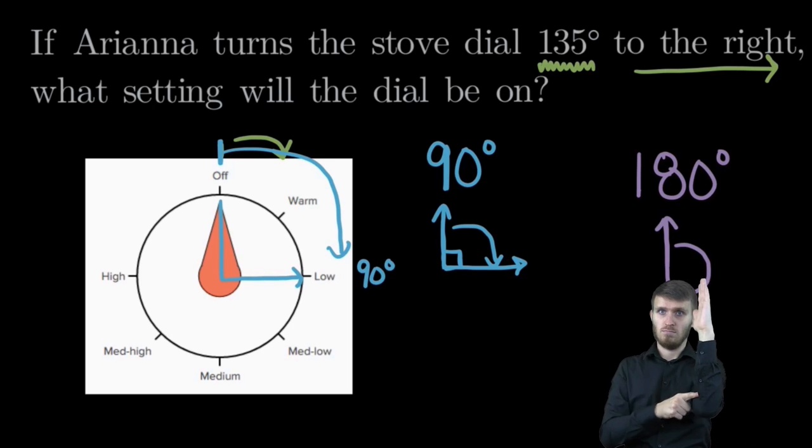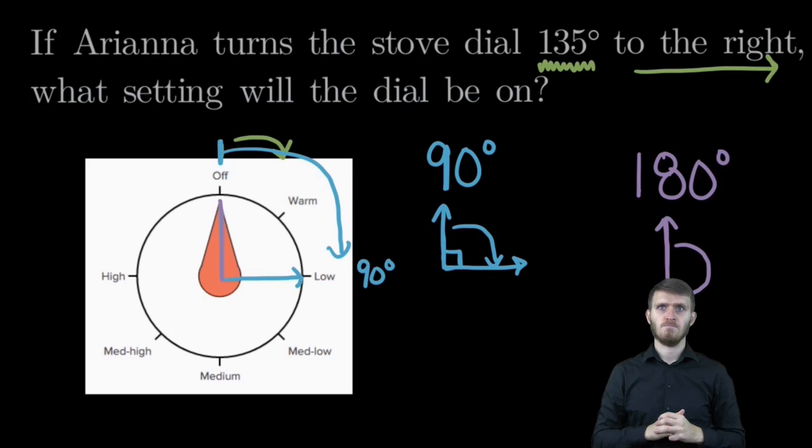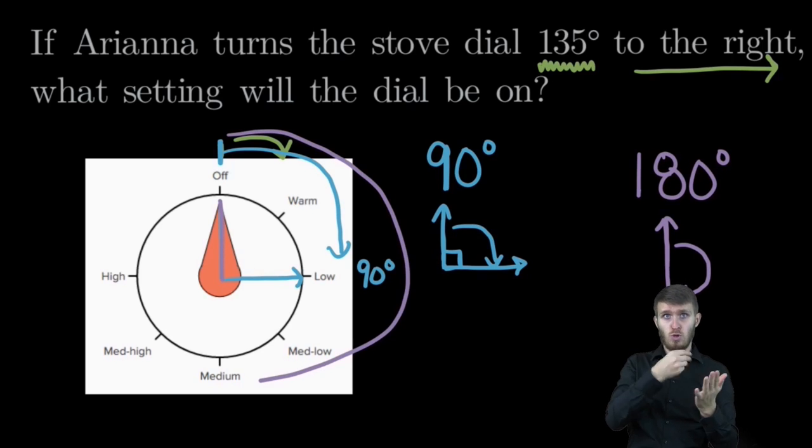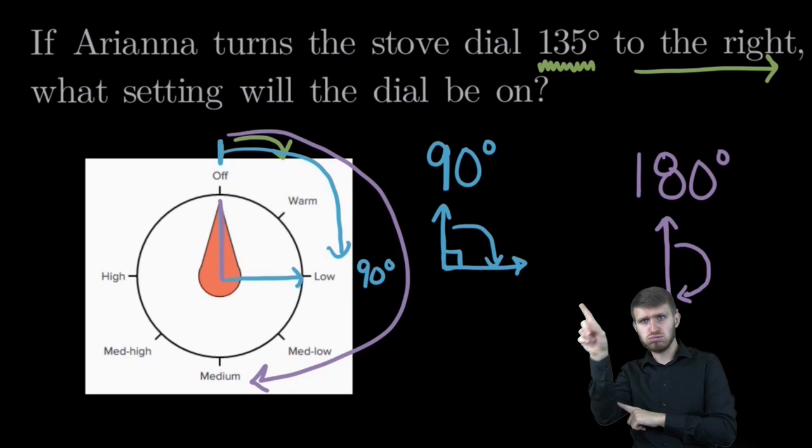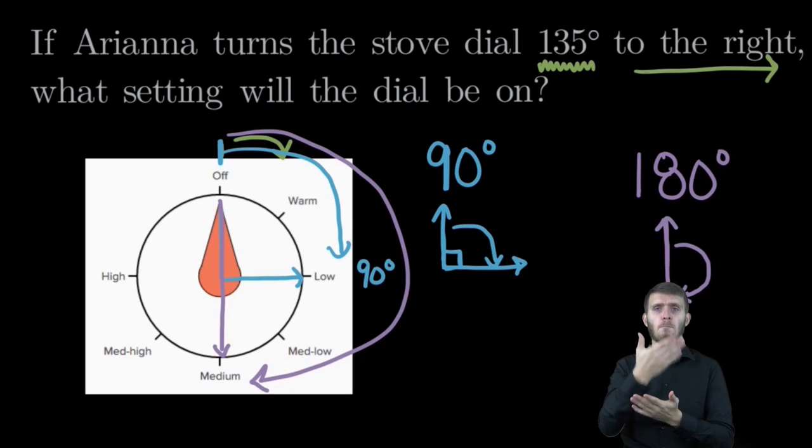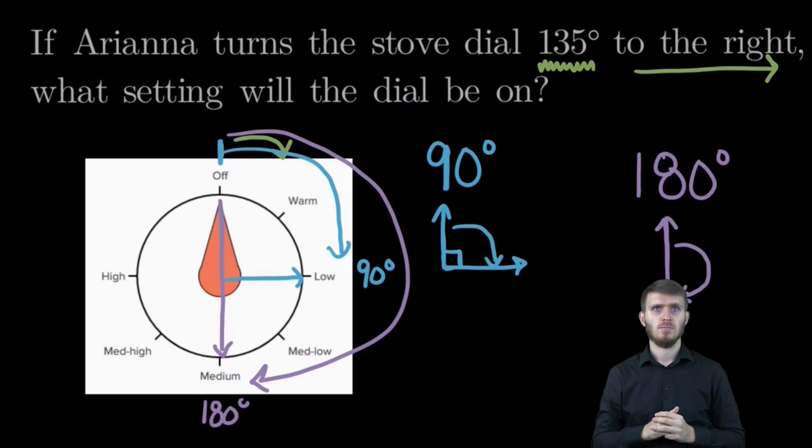So again, looking at our knob, if we started at the top and we went around 180 degrees, we would end up facing straight down at medium. This would be 180 degrees.